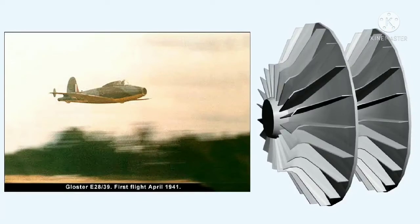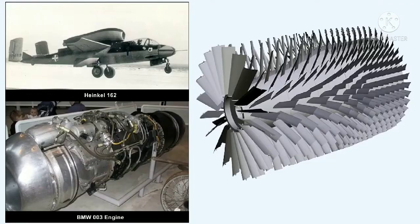One critical difference between the German engines used in the Heinkel and the later Messerschmitt 262 and those developed from Sir Frank Whittle's original engine was the type of compressor employed. While the Whittle engine used a centrifugal compressor, similar to the example shown here, the German engines, like the BMW 003 model used in the Heinkel 162, utilised an axial flow compressor, similar in design to the cutaway model shown.